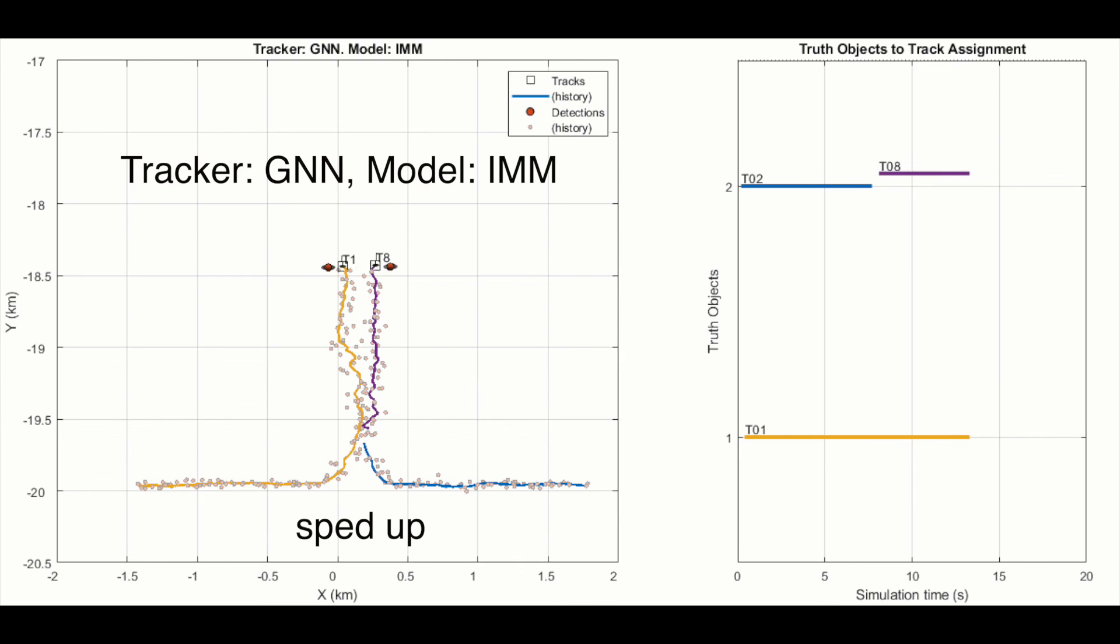But when the objects are close to each other, it doesn't do so well. You can see that one track was deleted, and a new track was added a few detections later, so the algorithm got confused as to how many objects there were at one point. In fact, it jumped from track number 2 to track number 8, which means there were 5 other tentative tracks that it was maintaining before confirming the 6th one as track 8.